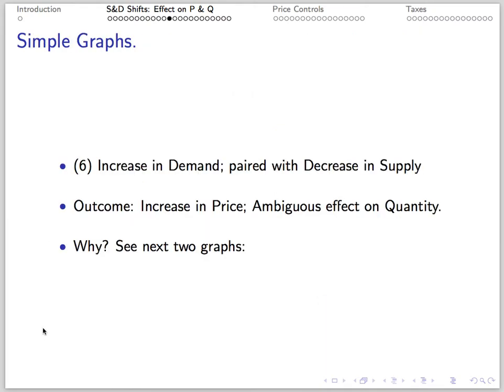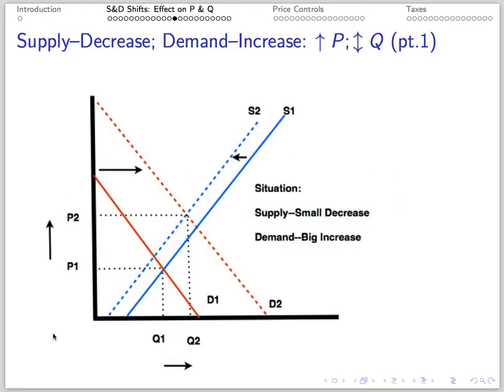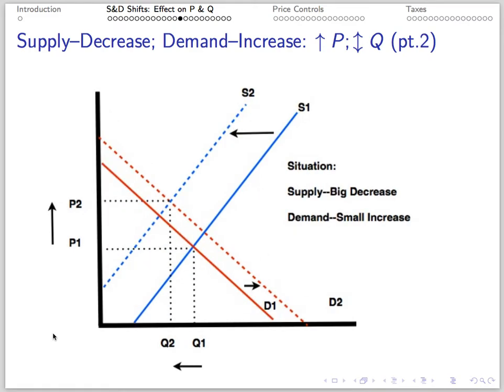Number 6: If we have an increase in demand paired with a decrease in supply, we get an increase in price and an ambiguous effect on quantity — it could rise or fall. In the first picture, a big increase in demand and small decrease in supply: price rises, quantity rises. In the second picture, a small increase in demand and a big decrease in supply: price rises, quantity falls.